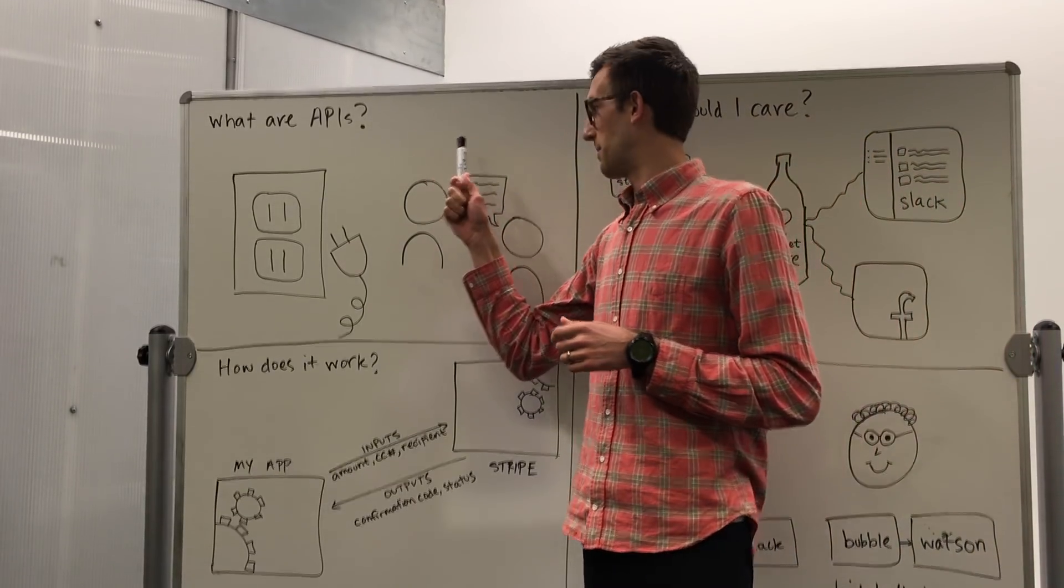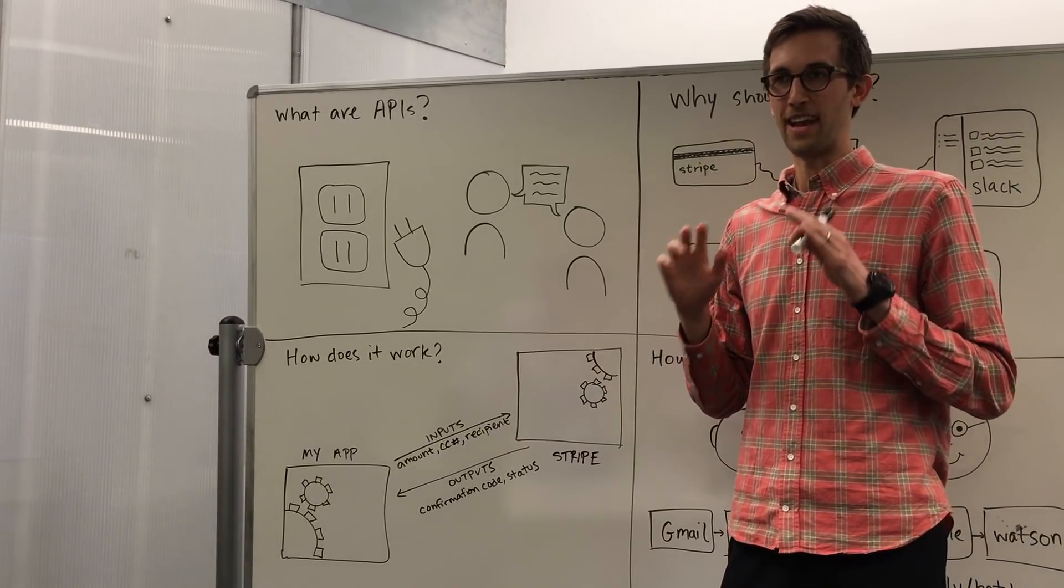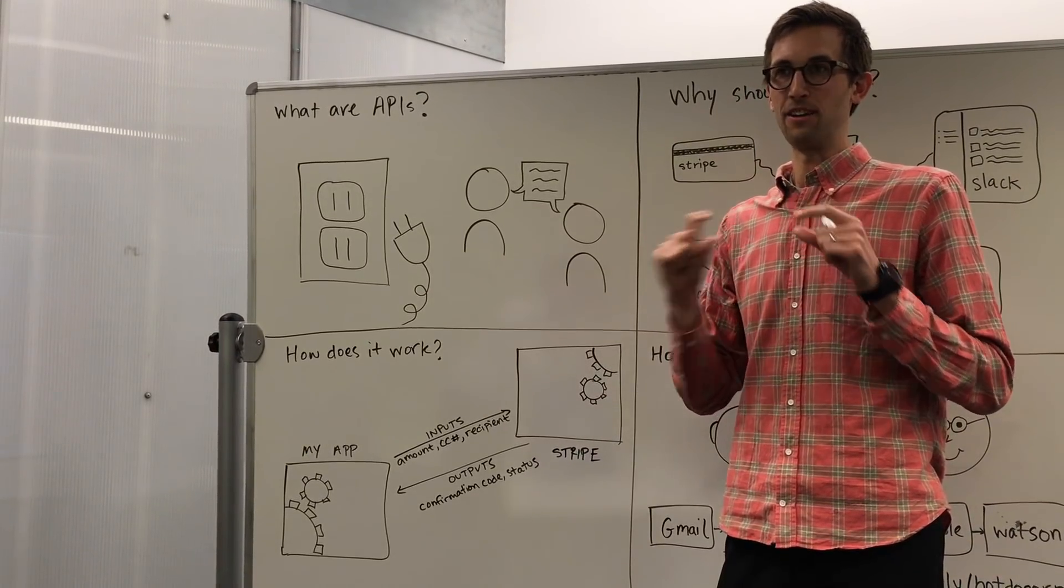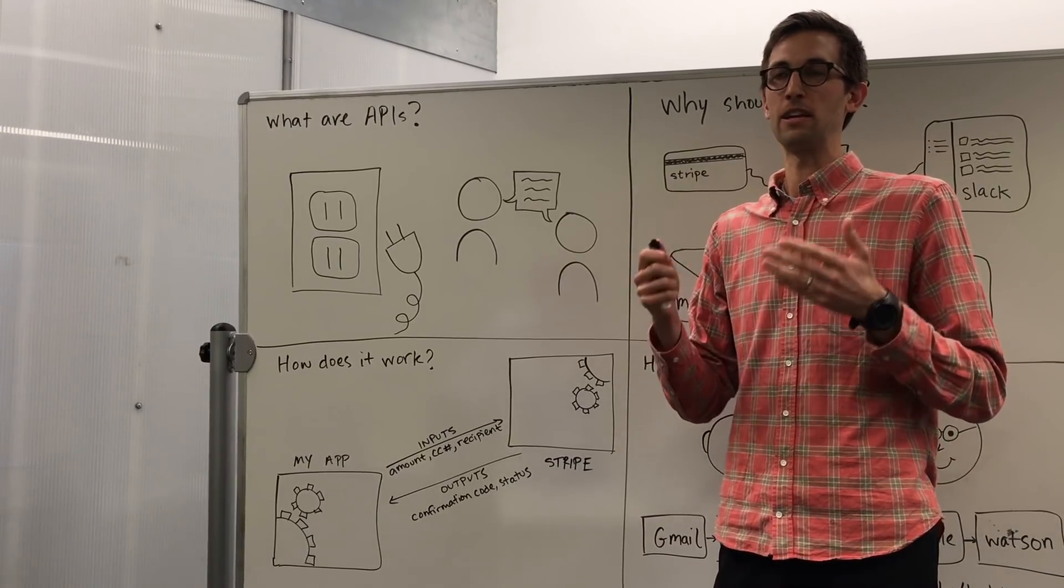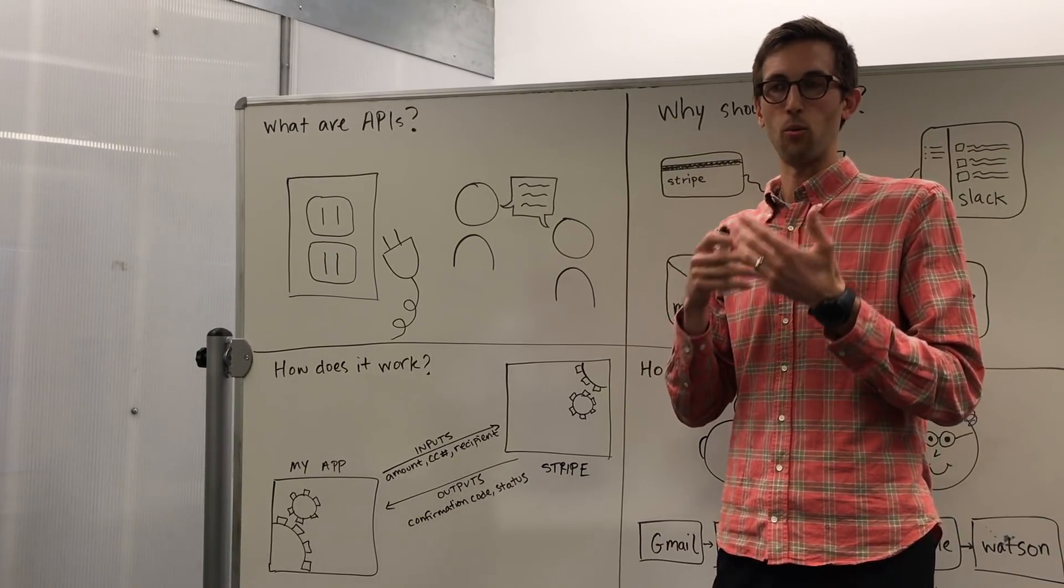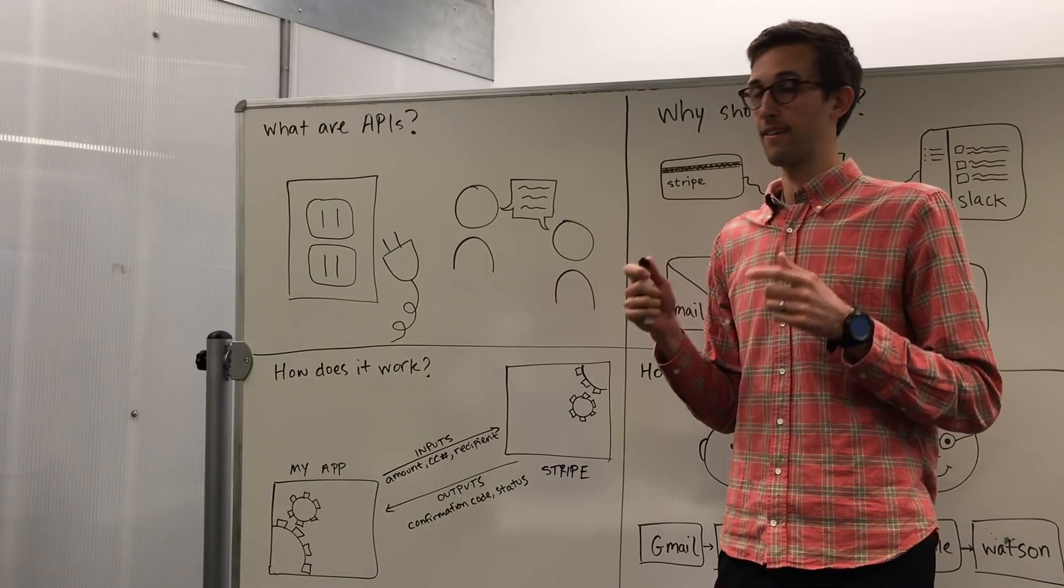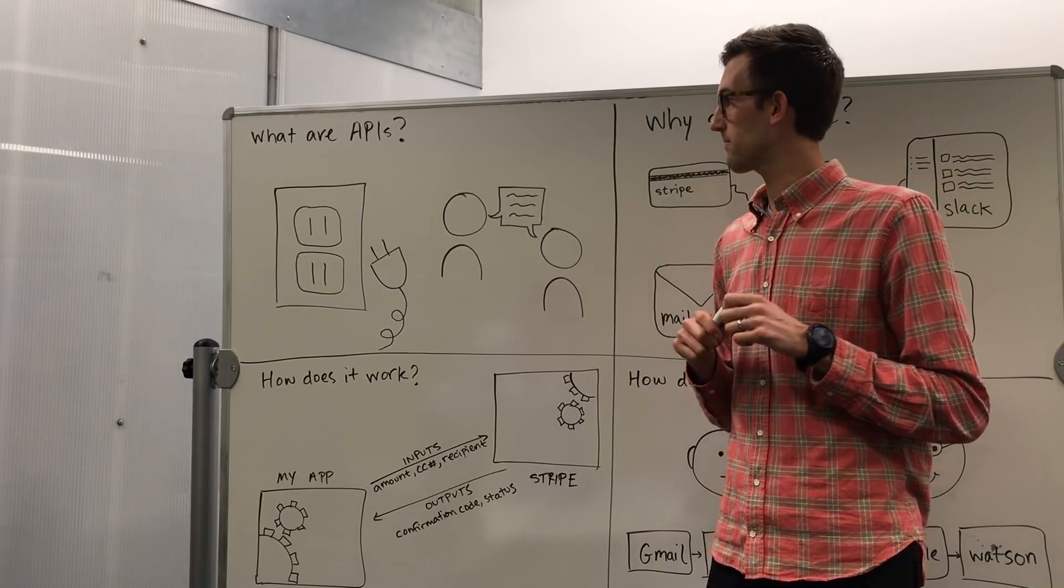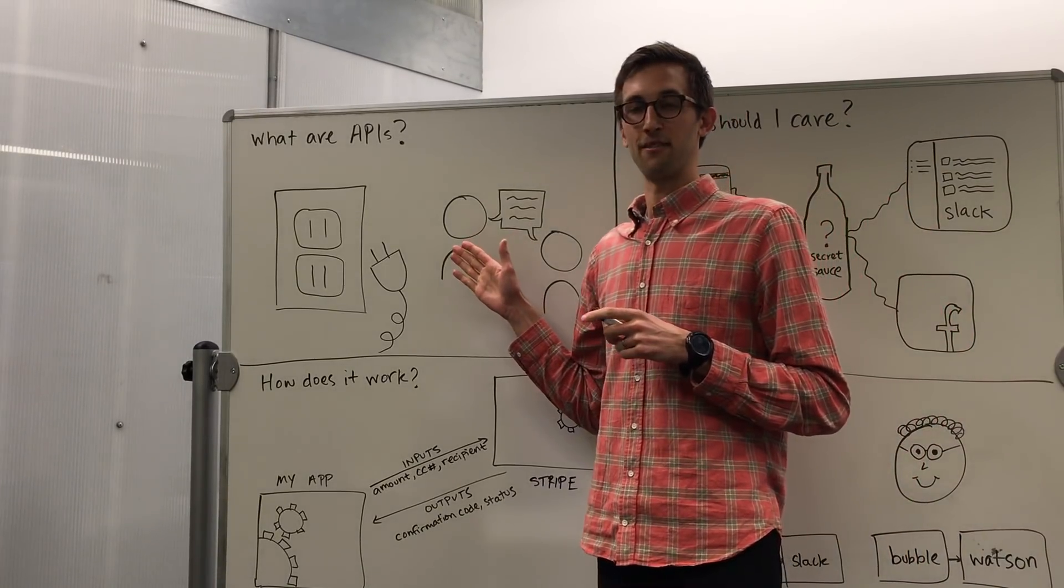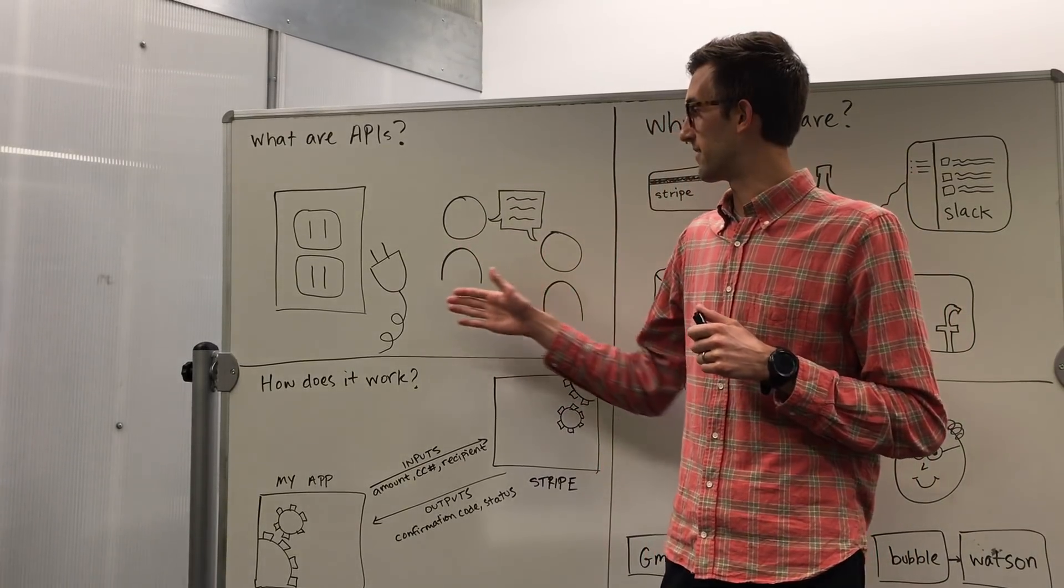So what is an API? The key word in API is the I, interface. An API is an interface which is basically just an agreed upon language or a way to communicate between two things. In this case, it's two pieces of software talking to one another to help out.